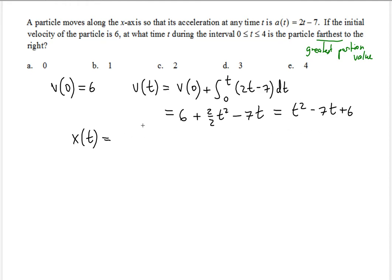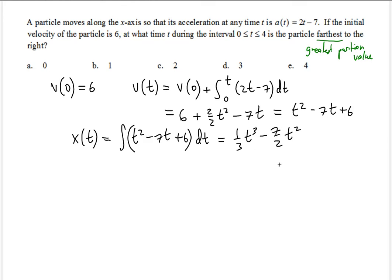We need to take the integral one more time to find x of t, which signifies the position function. So we take the integral of t squared minus 7t plus 6 dt, which gives us 1/3 t cubed minus 7/2 t squared plus 6t, plus a constant. In this case the constant is 0, since x of 0 is assumed to be 0 when not given.